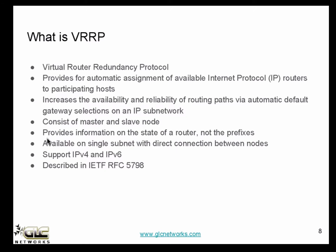VRRP is responsible for checking the default gateway — whether the next router is up or not. If you want to set up VRRP, it has to be on a direct connection between nodes, and the IP addresses inside the VRRP should be in the same subnet. VRRP supports IPv4 and IPv6. The detailed description about VRRP is available in IETF RFC 5798.